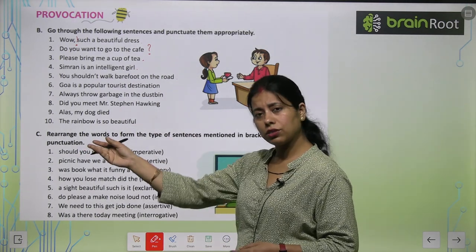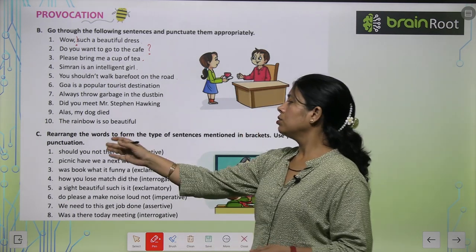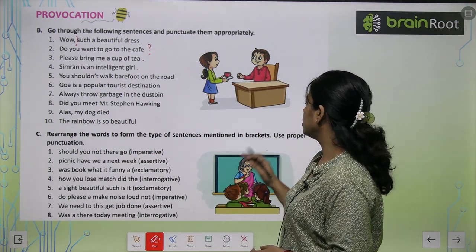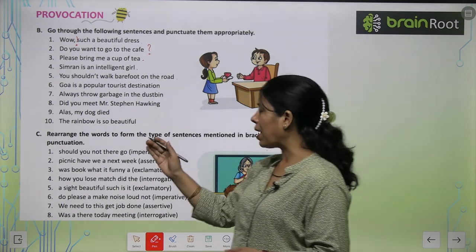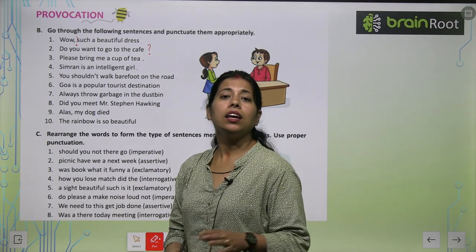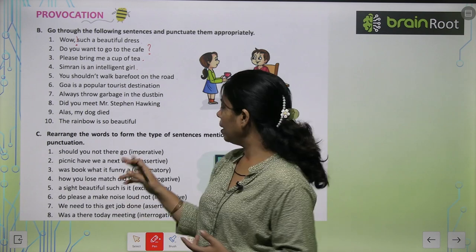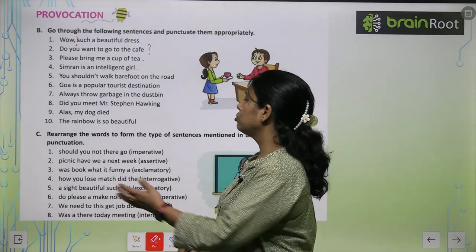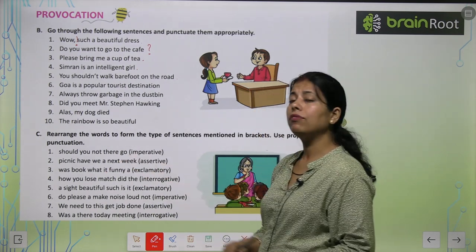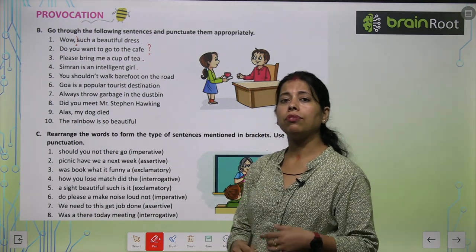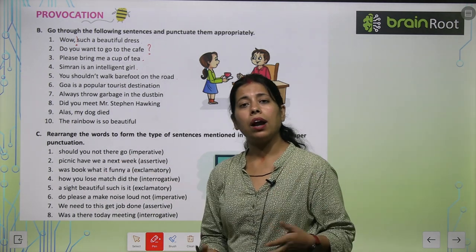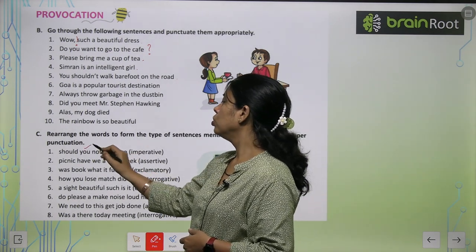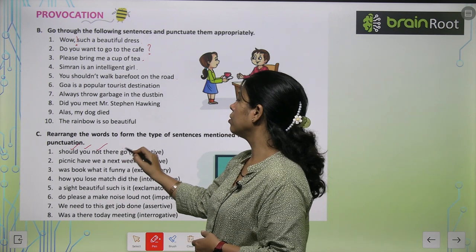Now, rearrange the words to form the type of sentence mentioned in the bracket. In the bracket, a sentence type is given and jumbled words are provided. For example, to make an imperative sentence from 'should you not go there' — we rearrange it to: 'You should not go there.'